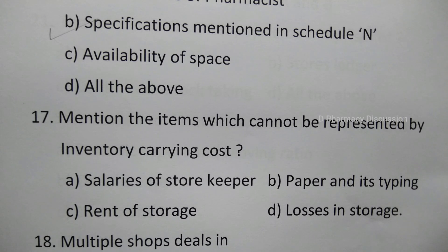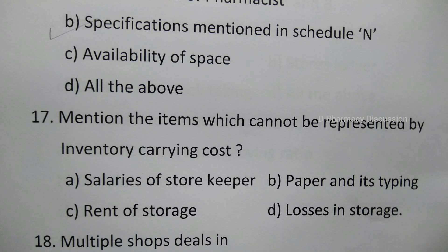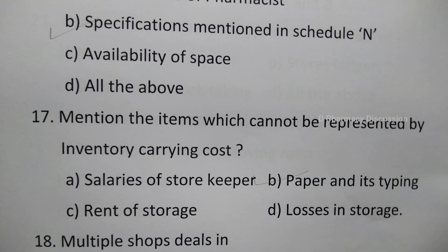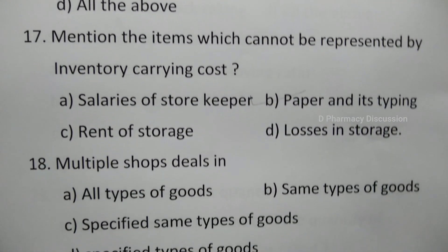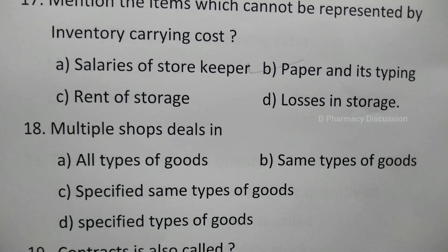Question 17: Mention the items which cannot be represented by inventory carrying cost — option A: salaries of store, B: paper and its typings, C: rent of storage, D: losses in storage. The correct answer is option B, paper and its typing.